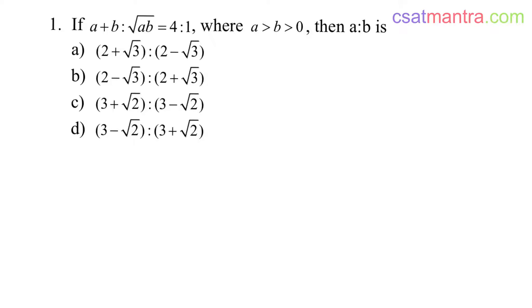If A plus B to square root of AB equals 4 to 1, where A is greater than B greater than 0, then A to B is... Options are given.